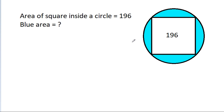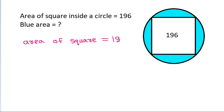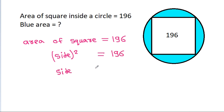In this video, we have given that the area of a square is 196. We have to find the blue area. Area of a square is equal to 196, and area of a square equals side squared, so side squared is 196. Therefore, the side will be equal to the square root of 196, that is 14.